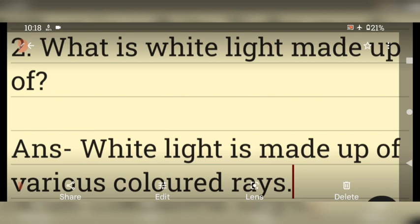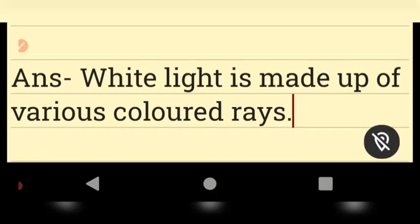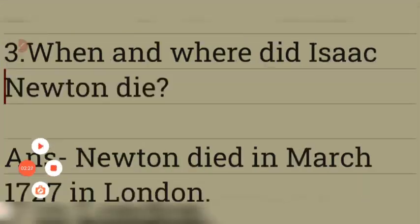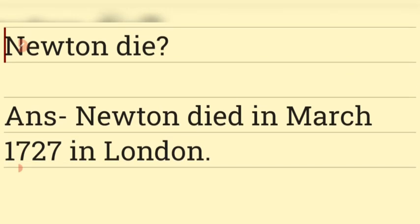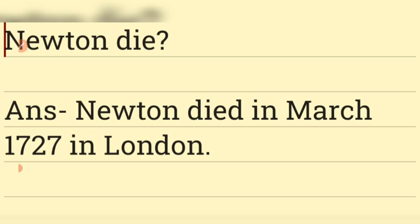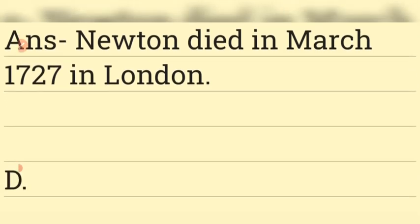Question number 2: What is white light made up of? White light is made up of various colored rays. Now move to the next one — question number 3: When and where did Isaac Newton die? Isaac Newton died in March 1727 in London.